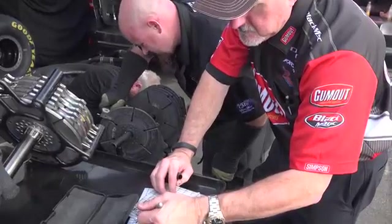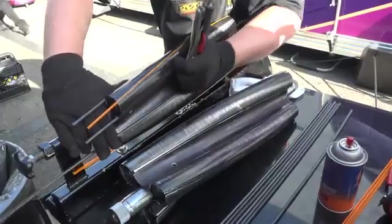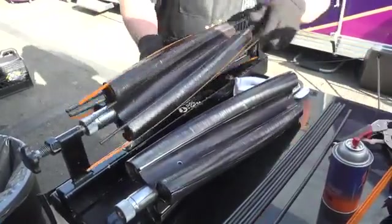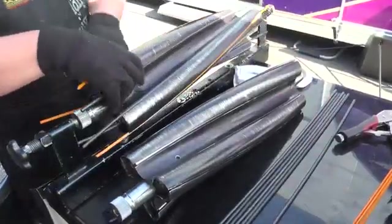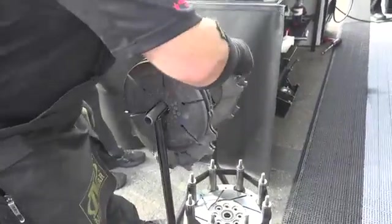The clutch is replaced after every run and it does occasionally weld together when it locks up. The supercharger is freshened after every four runs but can potentially last for many runs and is the longest lasting rotating component of the engine. The discarded parts are either scrapped or given to fans as souvenirs.